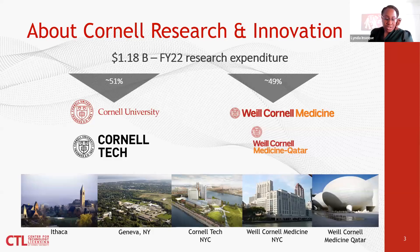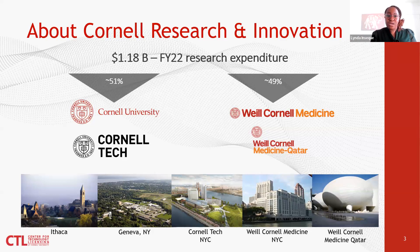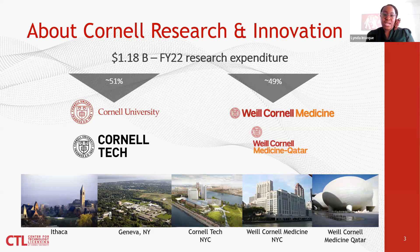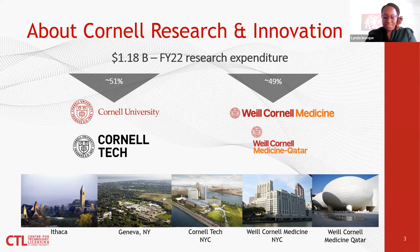Let's start with Cornell Research and Innovation. It's a big machine — $1.18 billion in research expenditure in fiscal year 2022. It's divided almost half-half between Cornell University in Ithaca and Geneva, as well as Cornell Tech, with 49% of this research expenditure coming from Weill Cornell Medicine and Weill Cornell Medicine in Qatar. We work with researchers across five different campuses: Ithaca, Geneva, New York, Cornell Tech in New York City, Weill Cornell in New York City, and also in Qatar.